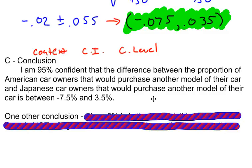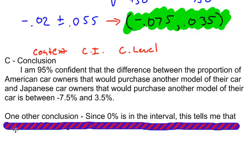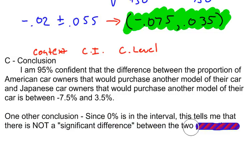There's one other interesting thing — this is kind of an extension. Confidence intervals and hypothesis tests are very closely related. When I see this interval and notice that there is a zero in the middle of it — one value is negative, one value is positive — that means zero is within this interval. Since 0% is in the interval, this tells me that there is not a significant difference between the two proportions. If zero is in the confidence interval when comparing two proportions, that tells you there is not a significant difference between them.